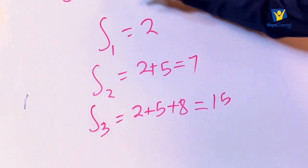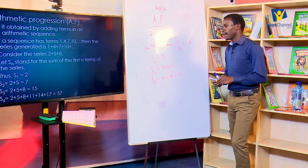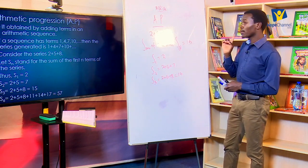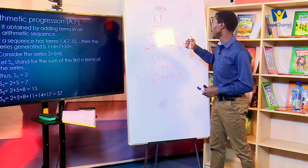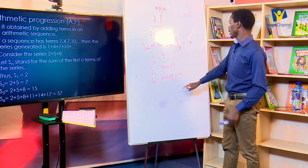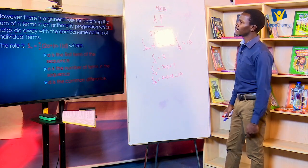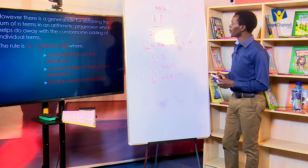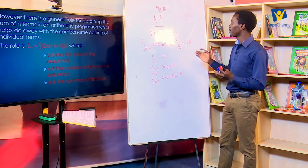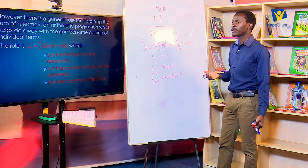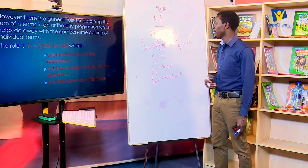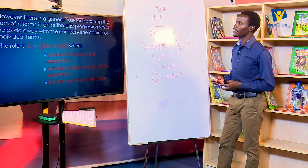The first term is 2 and the common difference is 5 minus 2 equals 3, same as 8 minus 5 equals 3. However, what if we have up to 100 or even 1,000 terms? You can't just add individual terms — we need a formula for working it out. And this gives us a very easy formula.